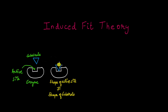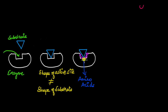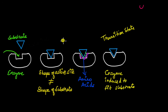According to this theory, after the substrate comes and binds to the enzyme, the enzyme actually undergoes a conformational change — a change in its 3D shape. Recall that enzymes are nothing but proteins, and proteins are made up of amino acids. There are amino acids at the active site of this enzyme, and these amino acids form temporary bonds with the molecules in the substrate. As these temporary bonds are formed, this causes the enzyme to undergo a conformational change, so the shape of the active site changes to fit the substrate better. The substrate induces a conformational change in the enzyme — that is why this is called the induced fit theory.